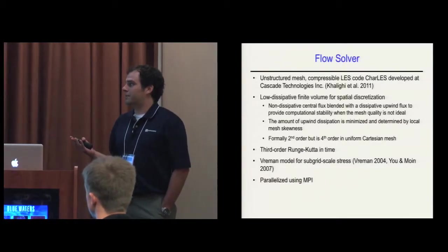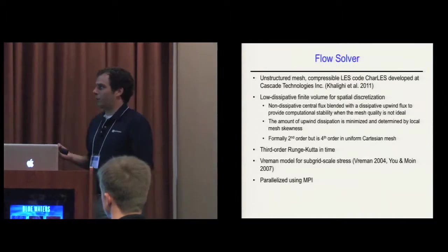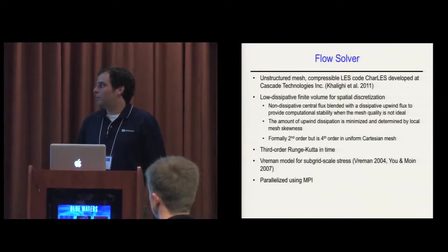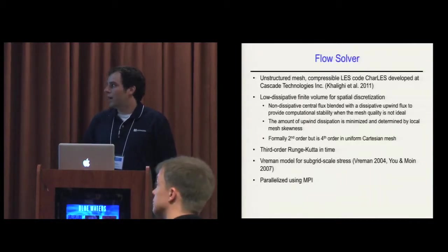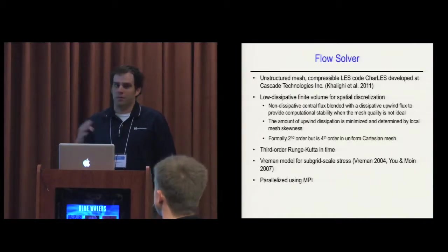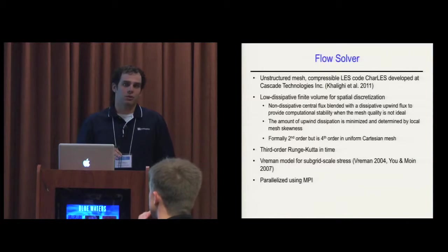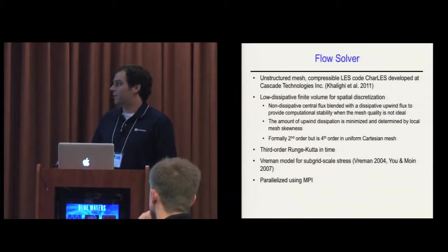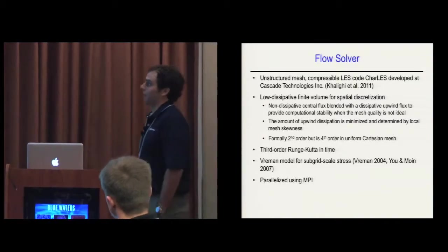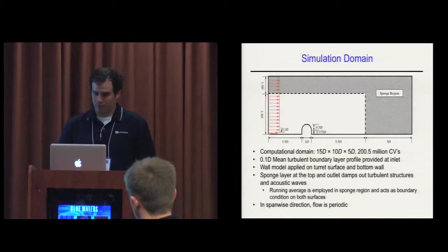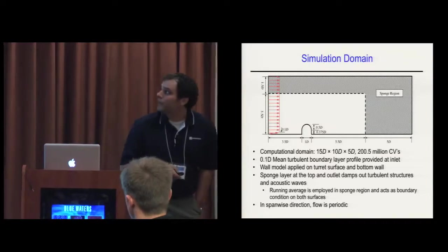Formally it's second order, but it's fourth order in regions with a uniform Cartesian grid. In time, we use third order explicit time marching, a Runge-Kutta method. The subgrid scale stress in LES uses a Vreman model, and the code is parallelized using MPI.